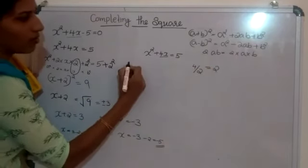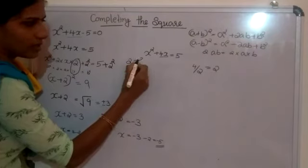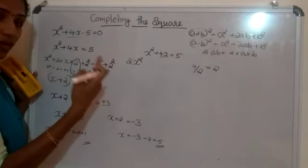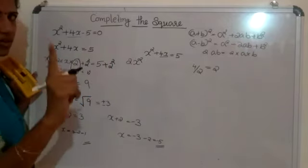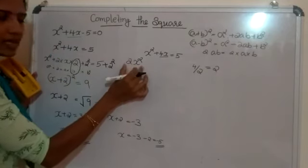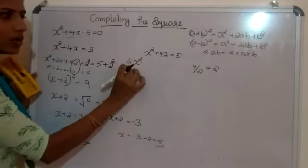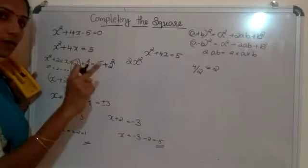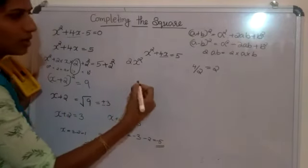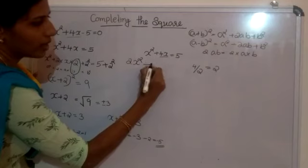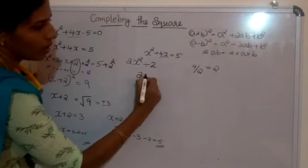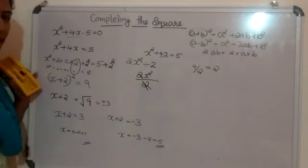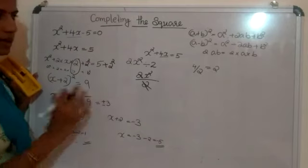If the coefficient of x² is not 1, for example if you have 2x², you need to first convert it so the coefficient becomes 1. To do that, divide the entire equation by 2. Then 2x² ÷ 2 gives x², and you proceed with the coefficient of x² equal to 1 before applying the completing the square method.